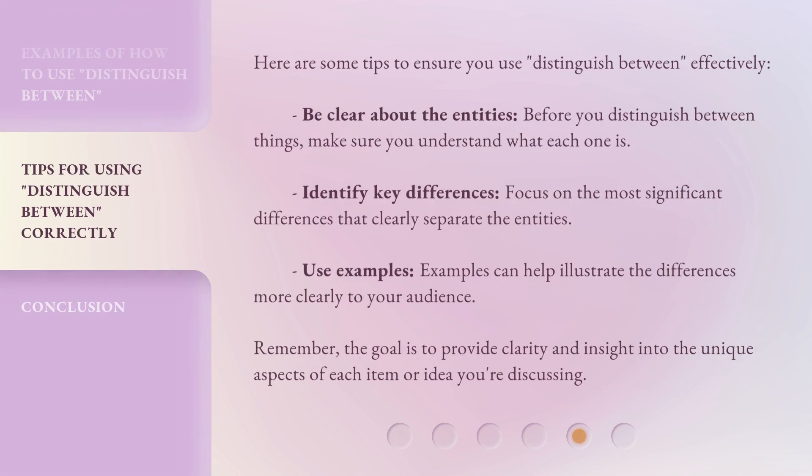Here are some tips to ensure you use 'distinguish between' effectively. Be clear about the entities: before you distinguish between things, make sure you understand what each one is. Identify key differences: focus on the most significant differences that clearly separate the entities. Use examples: examples can help illustrate the differences more clearly to your audience. Remember, the goal is to provide clarity and insight into the unique aspects of each item or idea you're discussing.